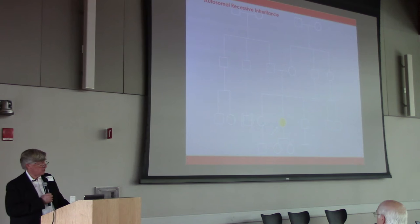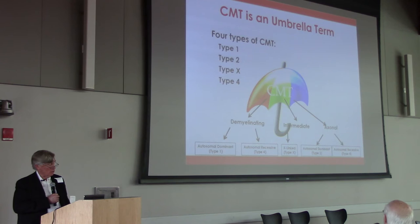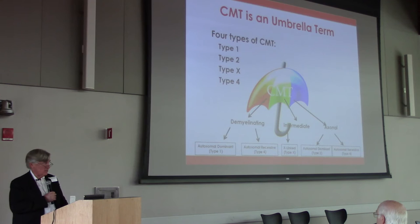That's how we categorize CMT: CMT type 1 is a dominantly inherited demyelinating neuropathy, type 2 is a dominantly inherited axonal neuropathy, type 4 is a recessive condition that can be either axonal or demyelinating, and then there is the X-linked form.